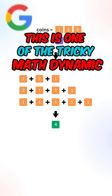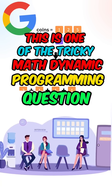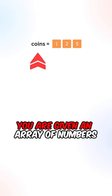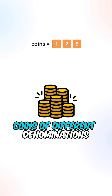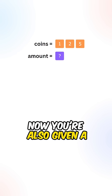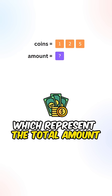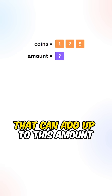This is one of the tricky math dynamic programming questions that appears in Google interviews. You are given an array of numbers which represents coins of different denominations. You are also given a value amount which represents the total amount of money. Return the number of combinations that can add up to this amount.